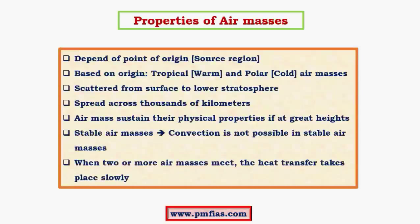Coming to the properties of airmasses: their physical properties depend on the source region — temperature, humidity, and density all depend on the source region. Based on origin, we have two types: tropical and polar. They are scattered from the surface to lower levels of the stratosphere, which is almost in contact with the upper layers of the troposphere. They are spread across thousands of kilometers, sometimes covering several countries. Airmasses sustain their physical properties better at greater heights — they are less stable at ground level but most consistent in the upper levels of the troposphere.